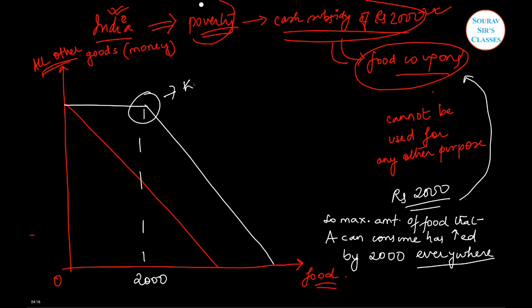We get a kink here, so we have a kinked budget line. What happens is that we see this was the earlier intercept of food and there has been an increase, but the intercept of all other goods axis remains unchanged.